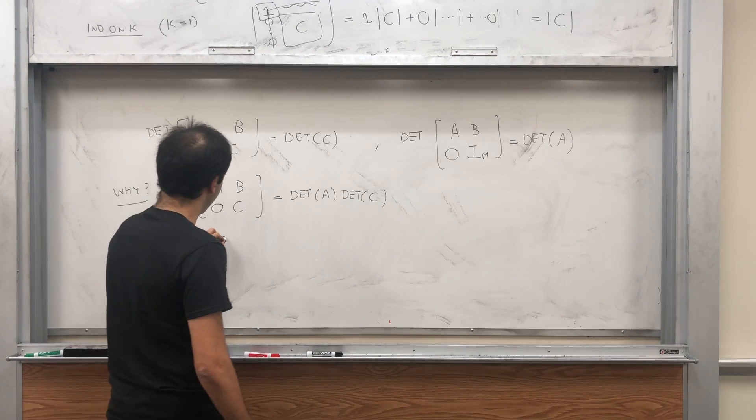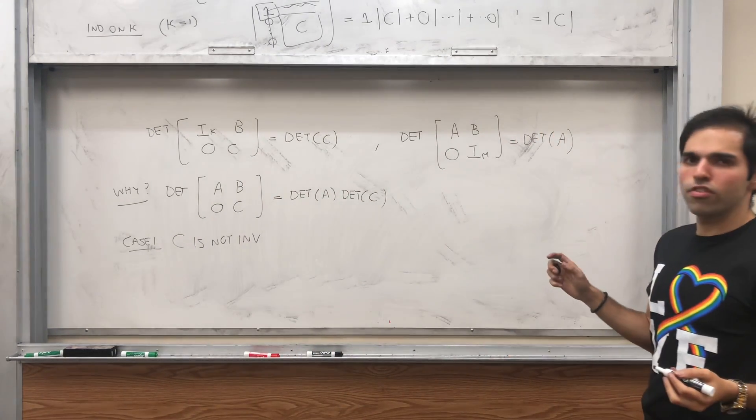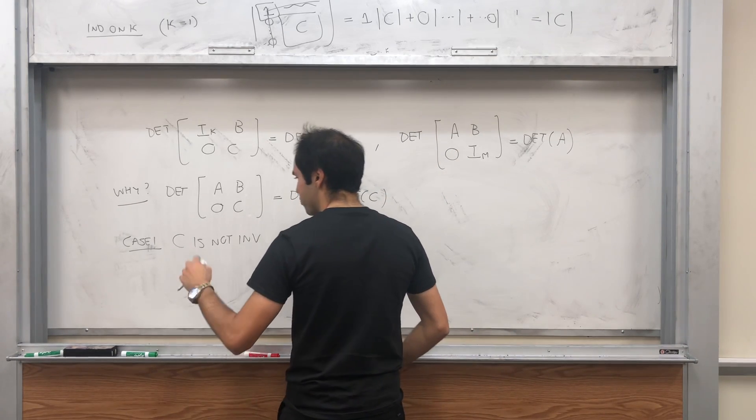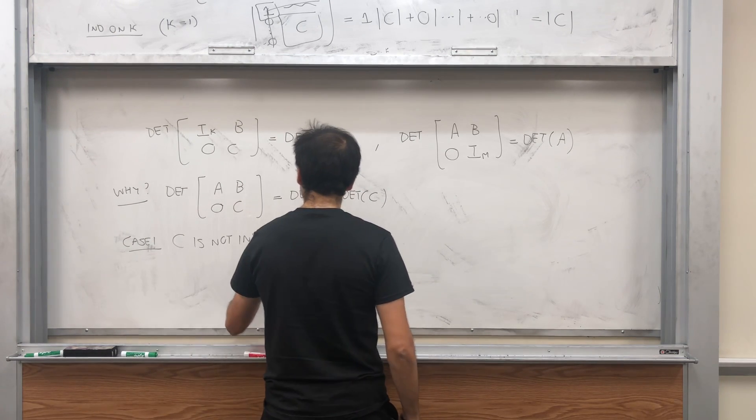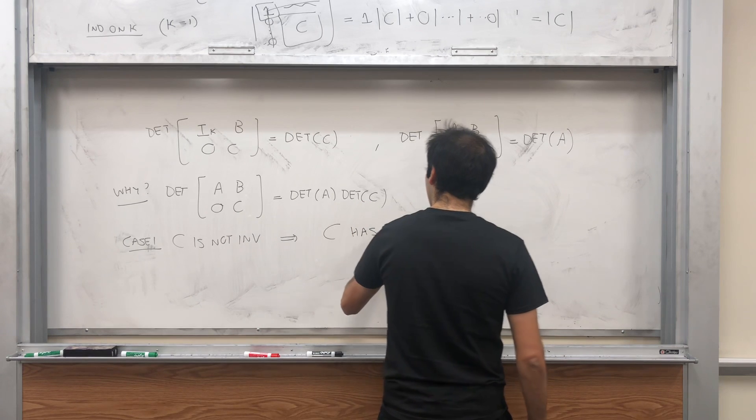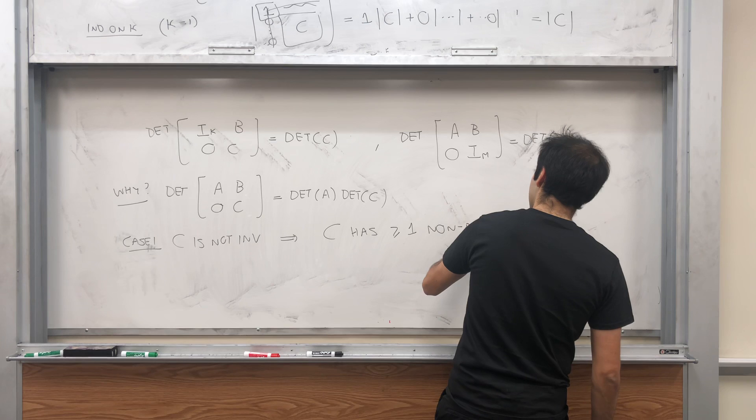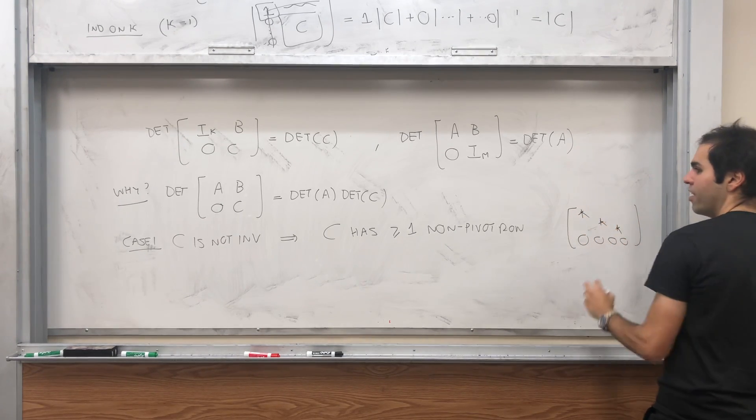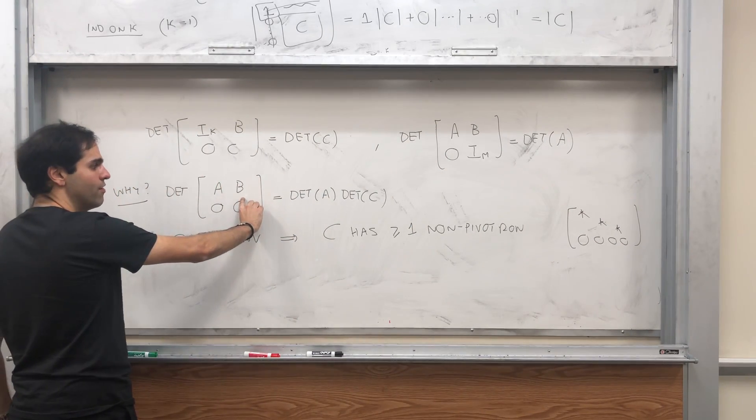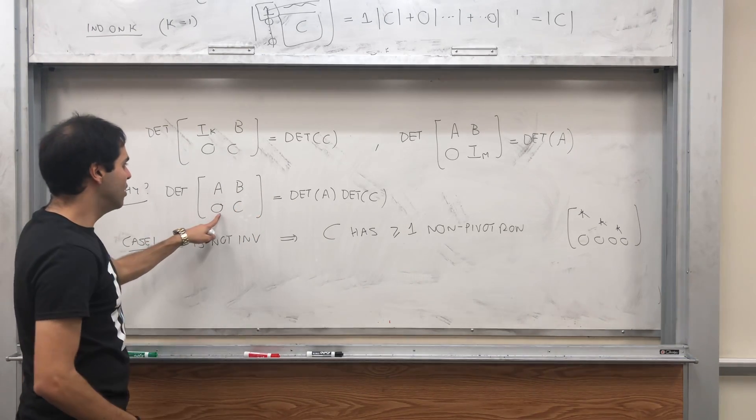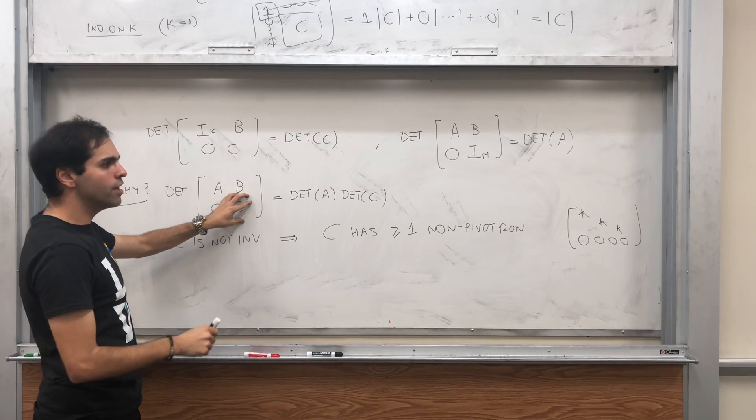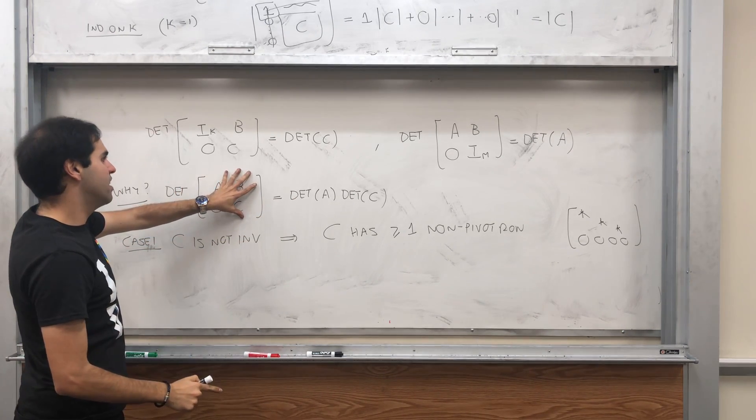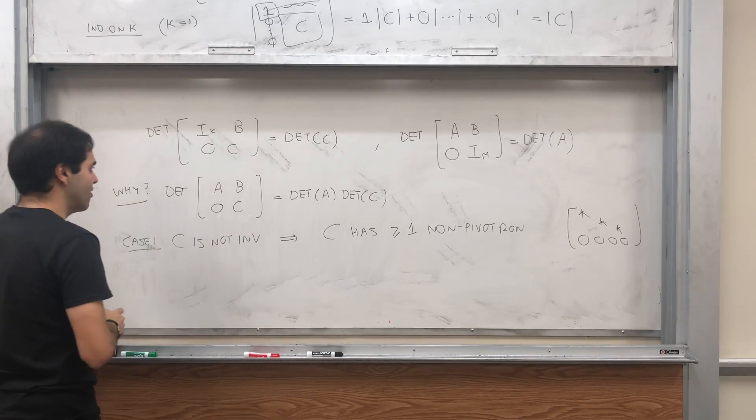C is not invertible. But look, if C isn't invertible, it means not every row of C has a pivot. So C has at least one non-pivot row. In other words, if you row reduce C, eventually you get a row of the form 0 0 0 with maybe some other pivots. But look, if C doesn't have a pivot in every row, then this whole matrix doesn't have a pivot in every row, because on the left-hand side are a bunch of zeros. So if you row reduce C and you get a row of zeros, then if you row reduce the smaller matrix you still get a bunch of zeros. And in particular, if you row reduce this gigantic matrix, you still get a row of zeros.